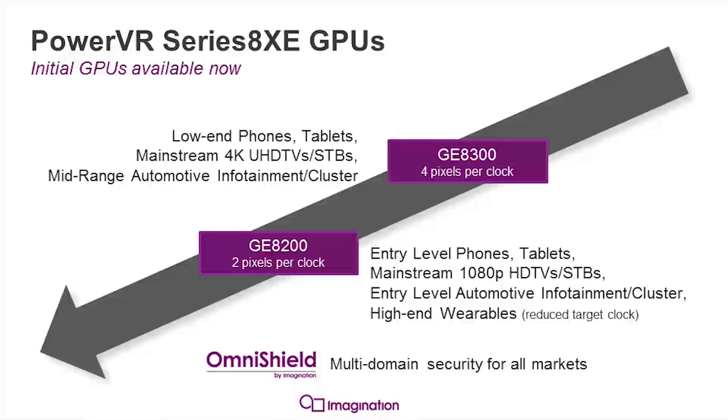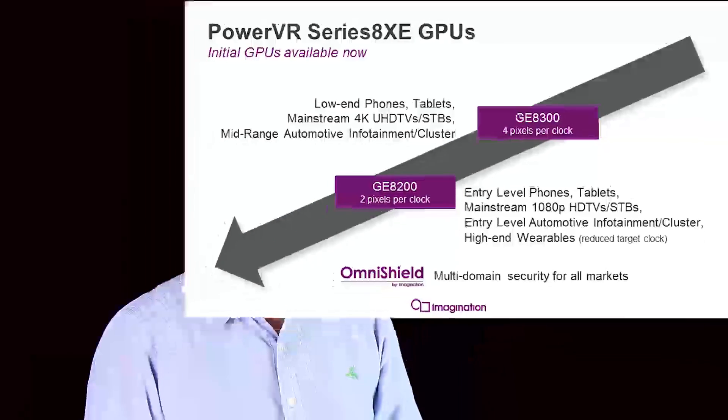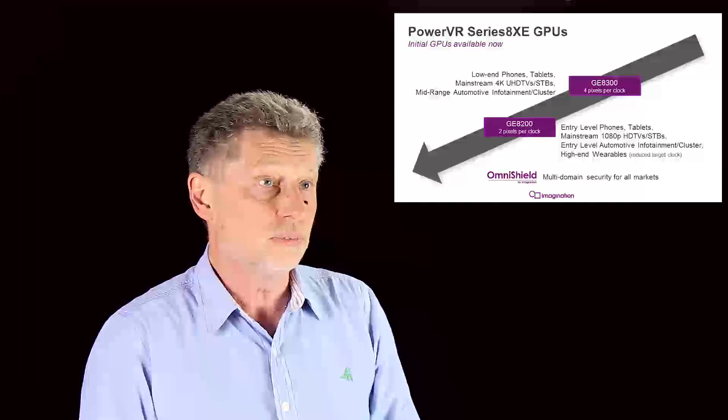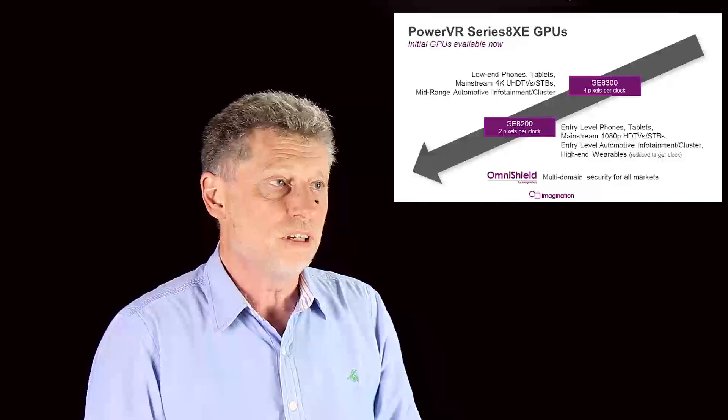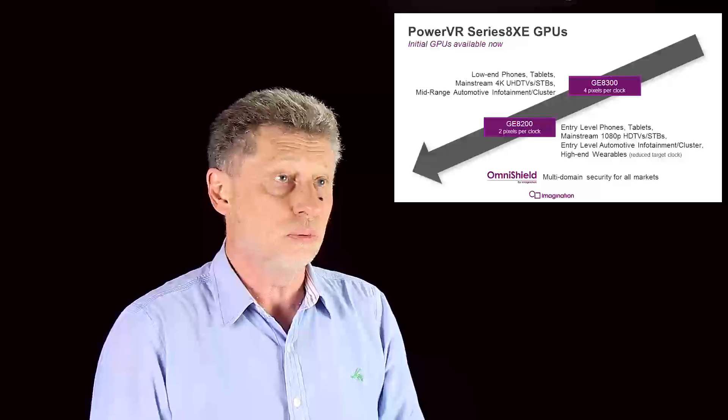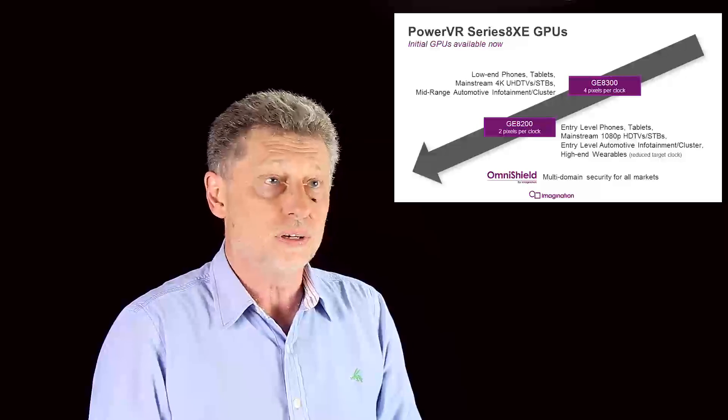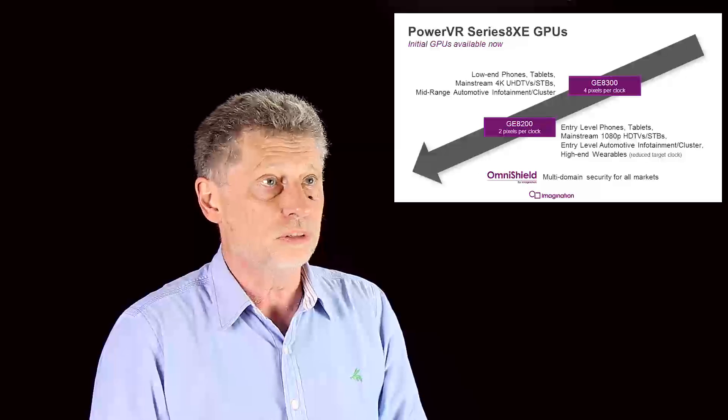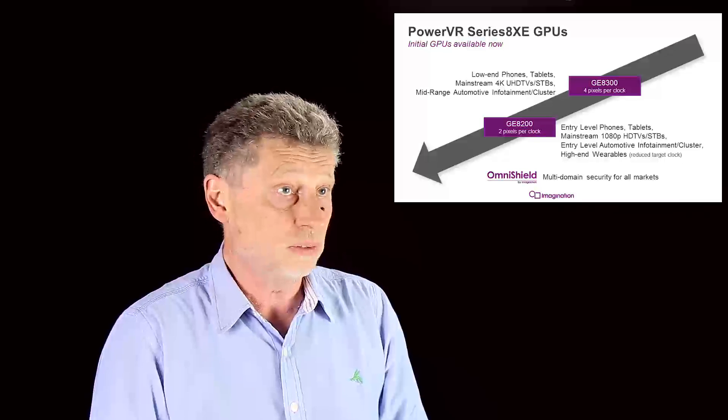The Series 8 XE range of GPUs consists at the present time of two cores, one which delivers 4 pixels per clock, and the other which delivers 2 pixels per clock. The higher spec part, 4 pixels per clock, is aimed at devices with a larger screen, such as a 4K TV, or devices with multiple screens, as is normally found in some automotive entertainment systems.